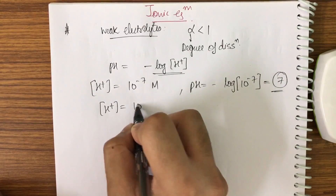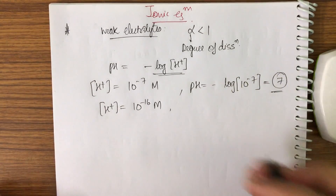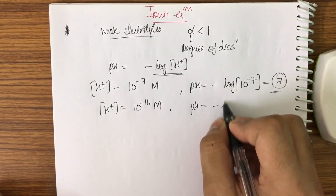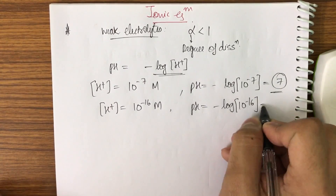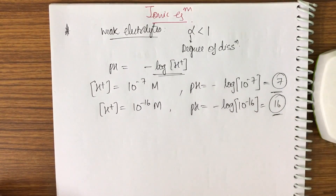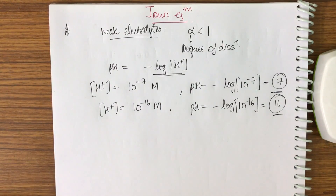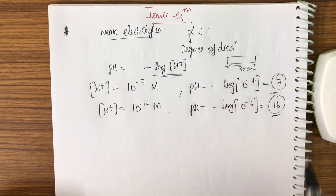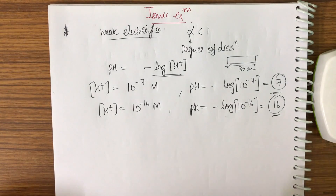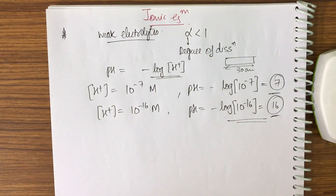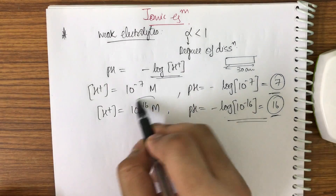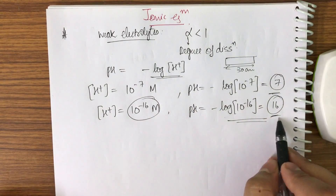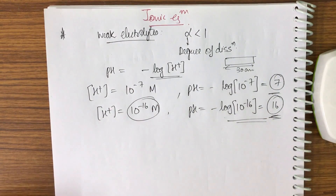If a question is asked where H⁺ equals 10 to the power minus 16 molars, then pH equals minus log of 10 to the power minus 16, which is 16. We have learned that pH must belong to 1 to 14, but that is not the case — pH is just a scale. Just as a scale of 30 cm doesn't mean 40 cm doesn't exist, a pH of 16 is not wrong.